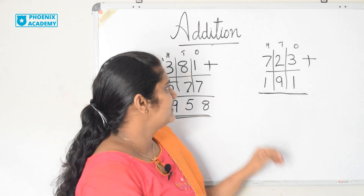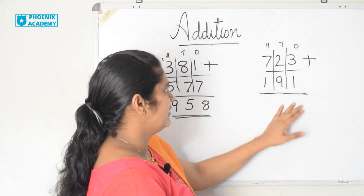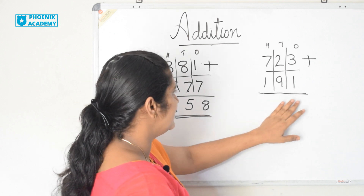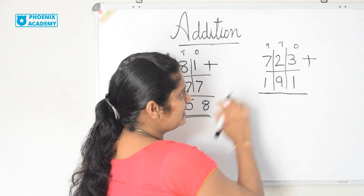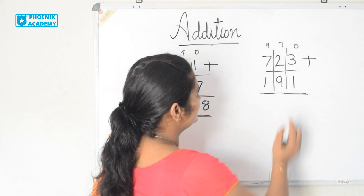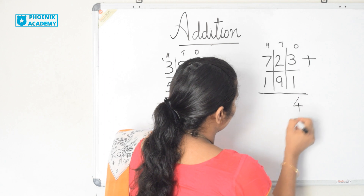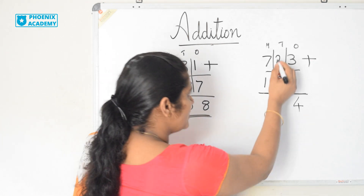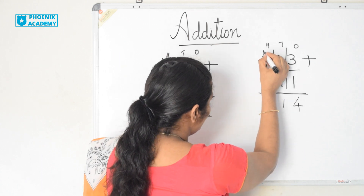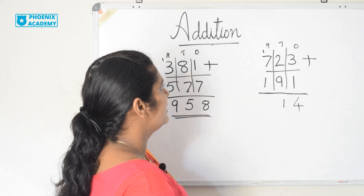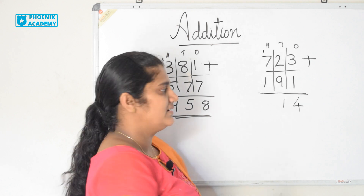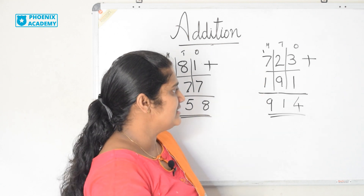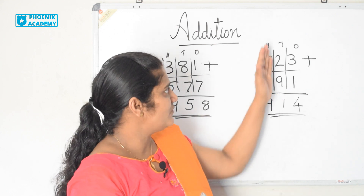Let's add this example. 723 plus 191. 723 is 3 ones, 2 tens and 7 hundreds. 191 is 1 one, 9 tens and 1 hundred. Let's add the 1's. 3 plus 1 is 4. 2 plus 9 is 11. 11 is 1 one and 1 ten. So I write 1 here and 1 carry forwarded to the 100's place. Let's add the 100's now. 1 plus 7 is 8. 8 plus 1 is 9. So the sum of 723 plus 191 is 914. Here also we are regrouping 10's.